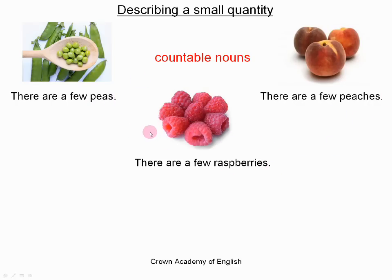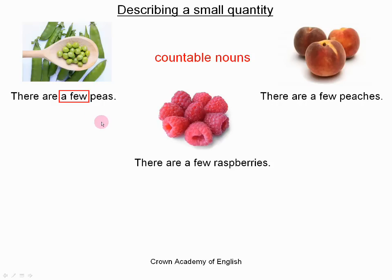So the structure is: we say 'there are a few peas.' With countable nouns, we only use the word 'a few.' And since we are talking about the plural, the noun must be in the plural form — so we add an S.